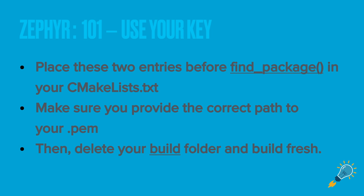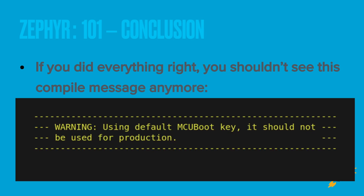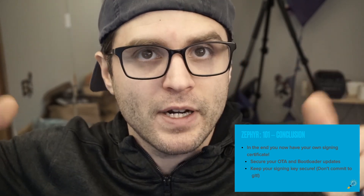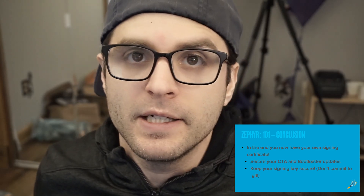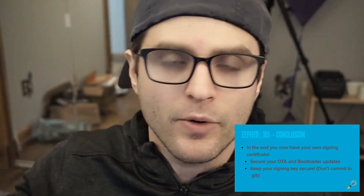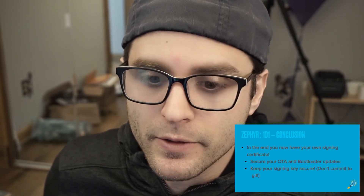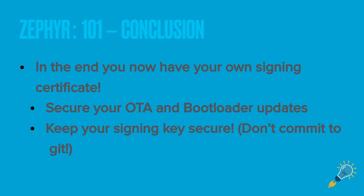Make sure you provide the correct path to your .pem file. To eliminate any doubt, I like deleting the build folder and doing a fresh build. If you've been using Zephyr on NCS you've seen a certain warning message before — it should go away when you do this properly. I then flash it to the device to make sure the bootloader has the correct key, then do a load over serial to confirm it takes the update. I'll change some text output to verify it accepted the signed image from my key rather than the default key that comes with Zephyr.